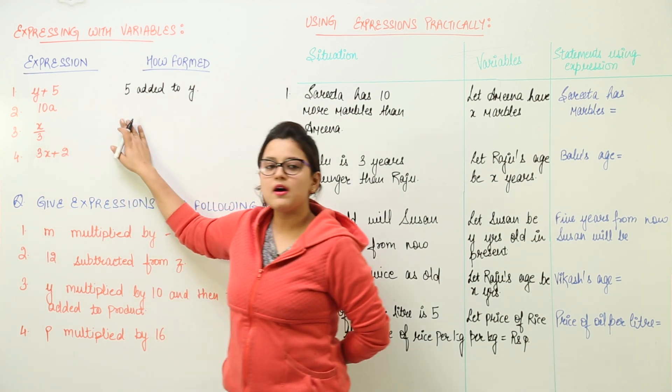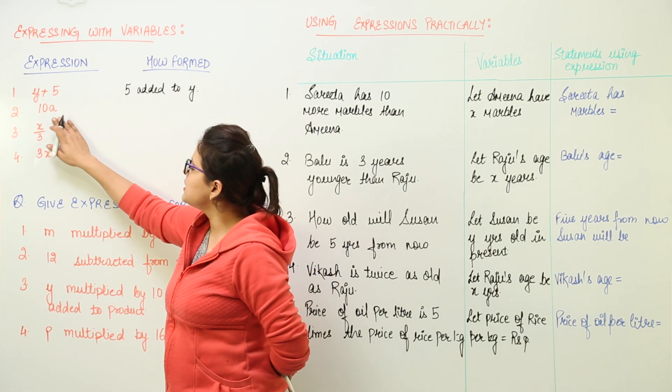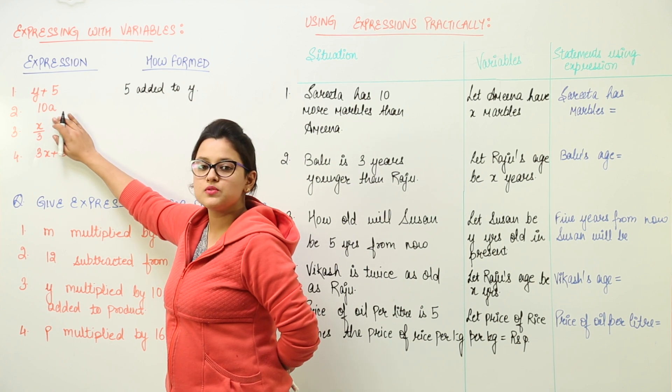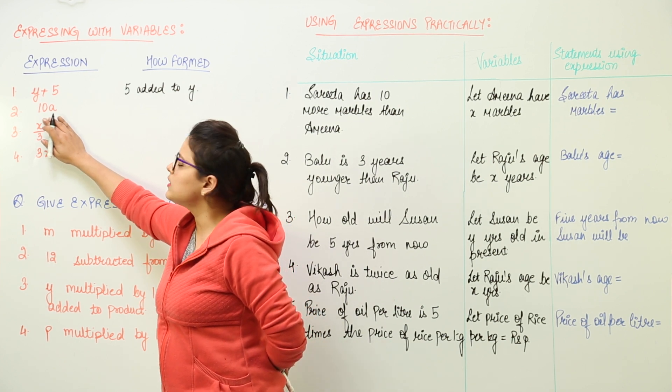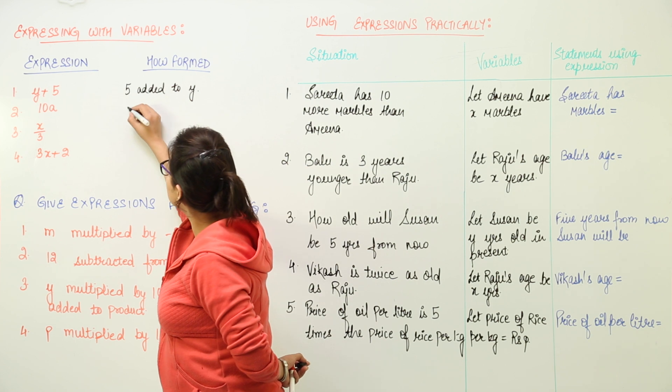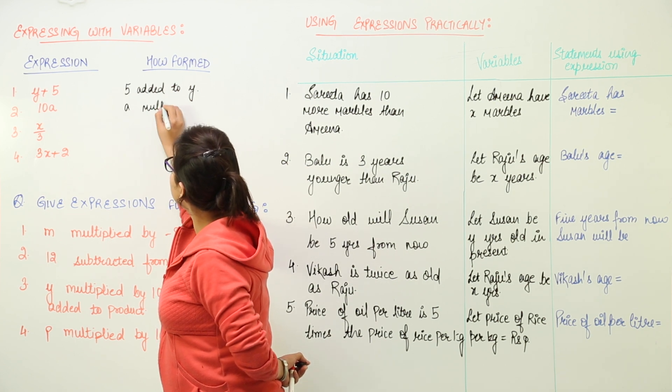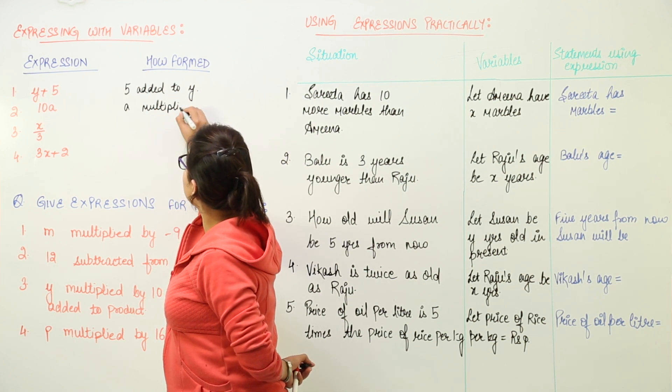For the next expression we have 10a. Now this means how is this formed? This would have been formed by multiplying a with 10. So we write over here a multiplied by 10.